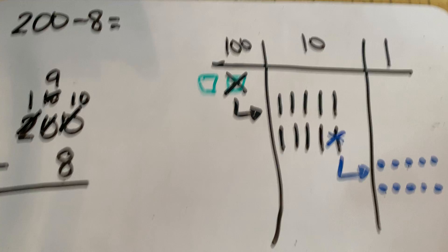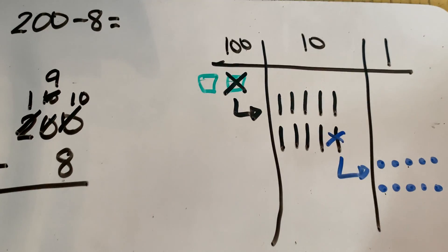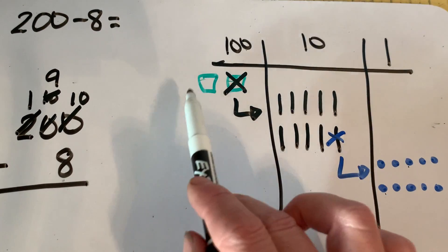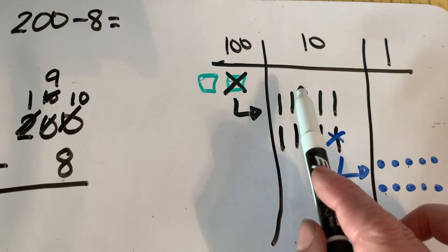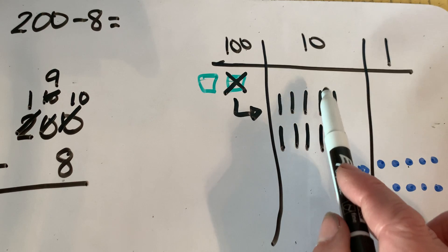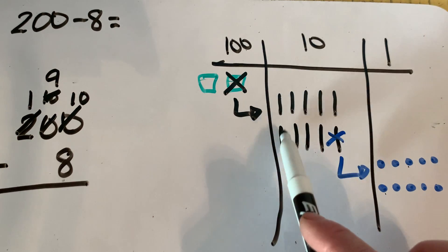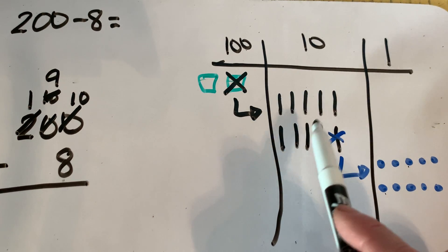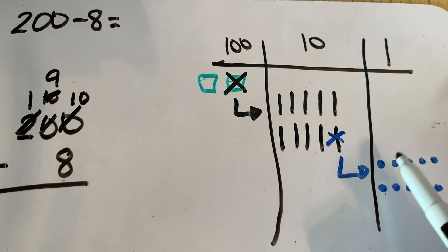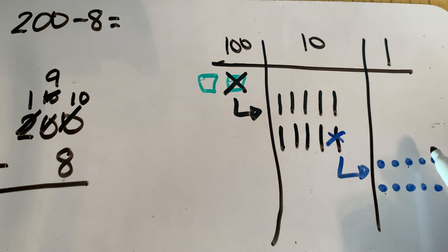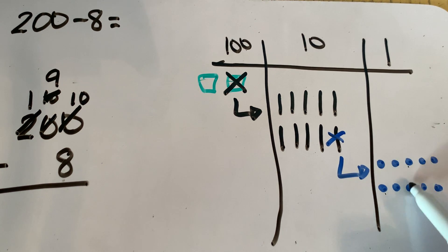Now let's check to make sure we still have 200 because we didn't actually subtract anything: 100, 110, 120, 130, 140, 150, 160, 170, 180, 190, 191, 192, 193, 194, 195, 196, 197, 198, 199, 200.